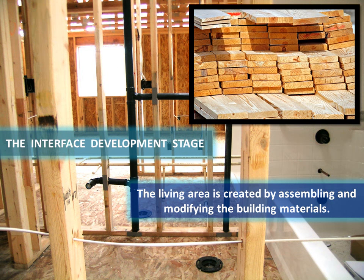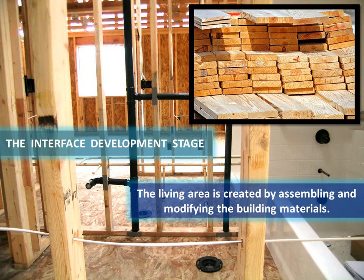Then comes the interface development stage. This isn't an architectural term — this is a programming term. We're going to talk about building an interface: how the user works with our application. But in designing or building a house, there's also an interface that's developed — how are the living quarters going to be arranged and how are they going to function for the comfort of the homeowner? That living area is created by assembling and modifying existing building materials: lumber, outlets, electrical cables, plumbing fixtures and pipes, insulation, vents, and vent work. All those materials are dropped off at the building site and the contractor simply assembles them and modifies them — in the case of lumber, maybe making some cuts so that things fit together.